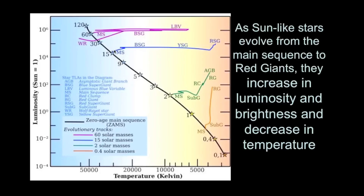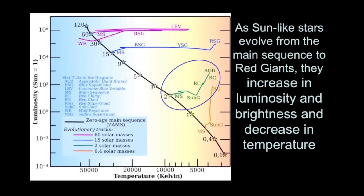More massive stars have different life tracks. They can go beyond the fusion of helium into carbon and oxygen and fuse even heavier elements — something we'll cover in another video. Their life tracks take them from extreme luminosities to similar luminosities but at very low surface temperatures. The circled track in the diagram most closely resembles the life track of a Sun-like star.